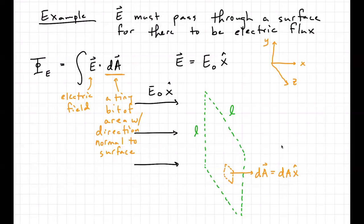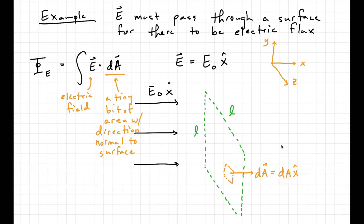There is one little ambiguity here, which is which direction to choose — there are actually two vectors perpendicular to the surface: one in the positive x̂ direction and one in the negative x̂ direction. I'm just going to call it the positive X direction. We'll worry about that ambiguity a little bit later. So the little dA could also be written as dY dZ x̂.